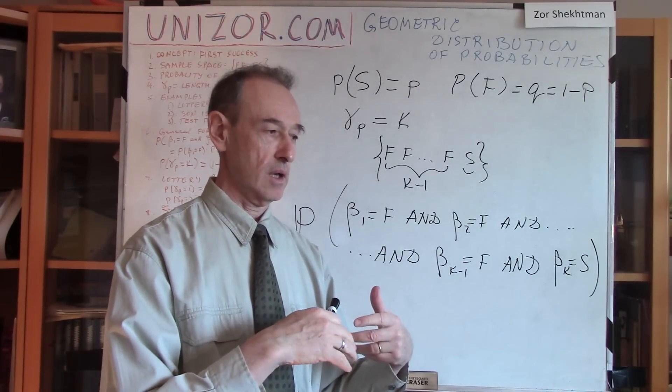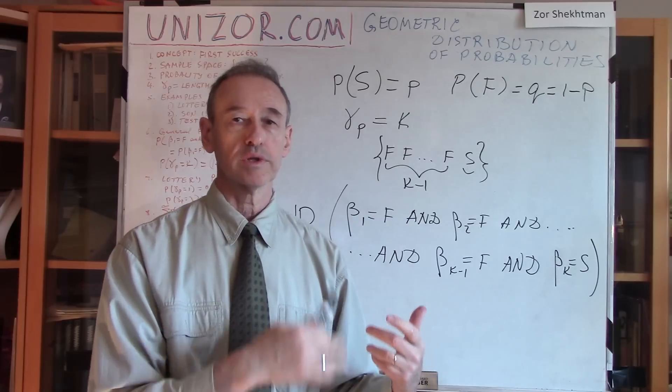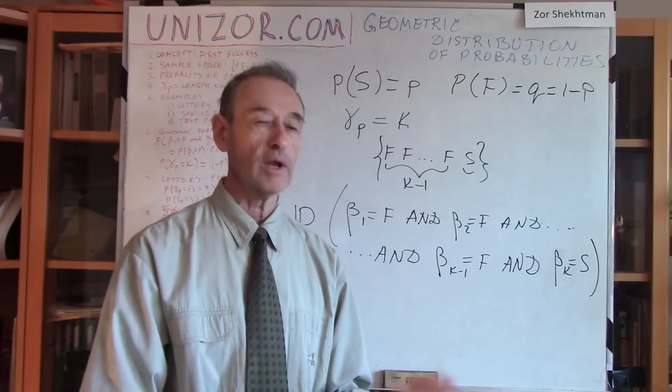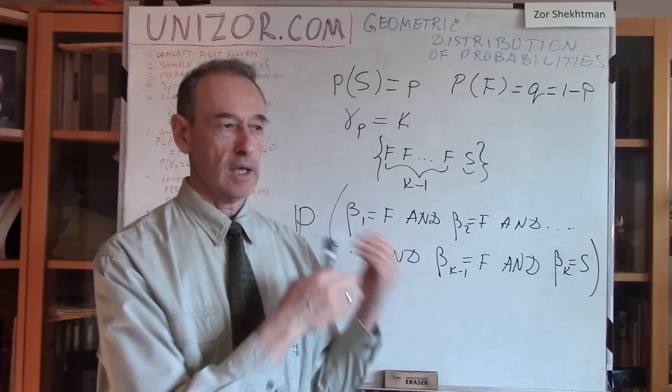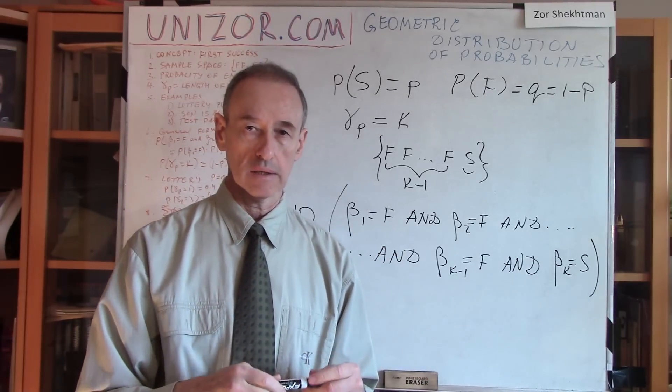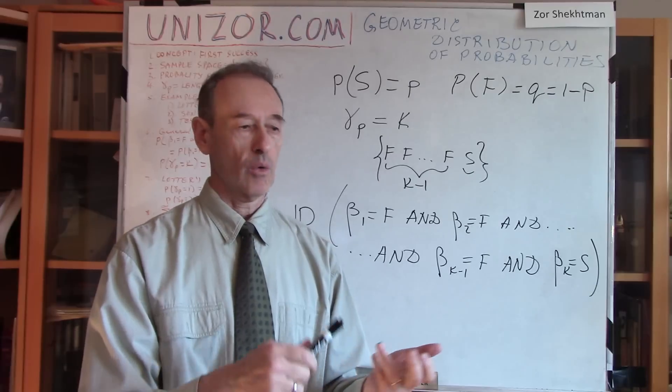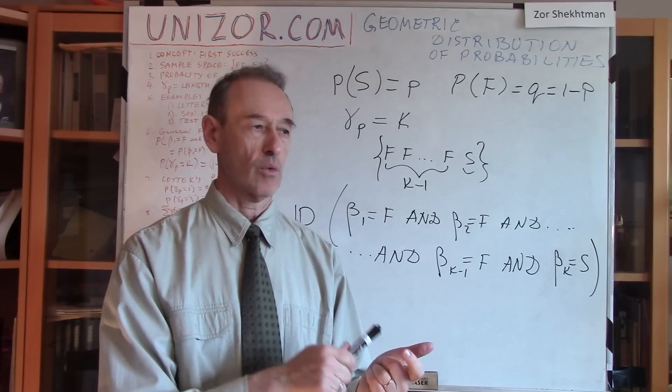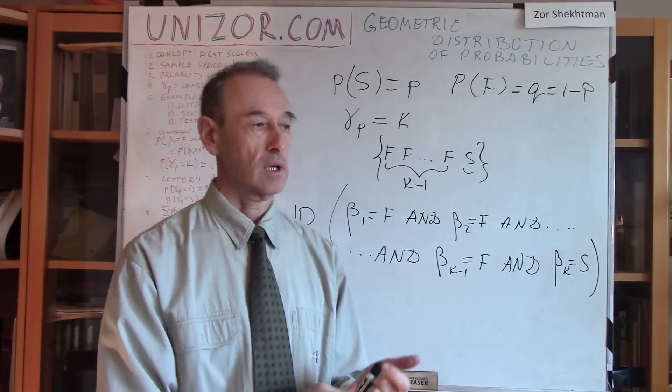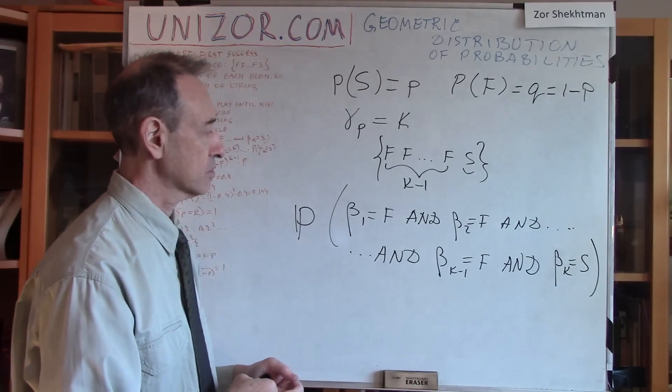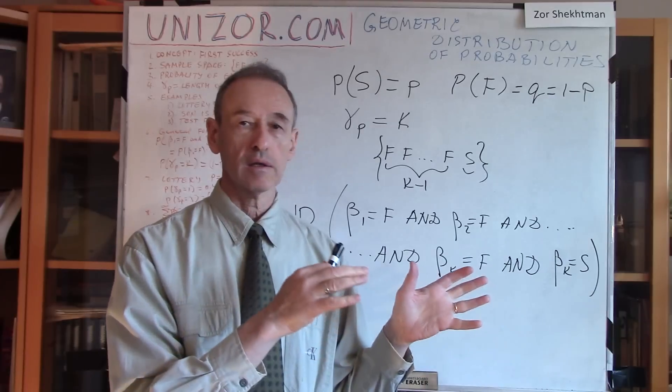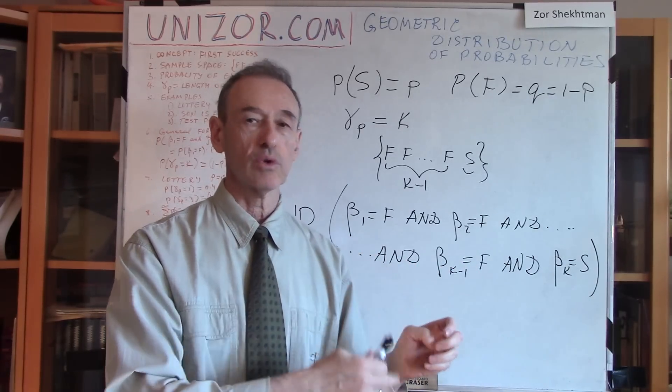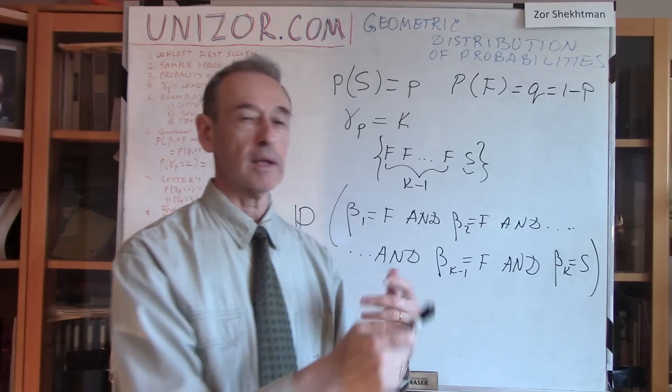Now, what's very important is all these Bernoulli experiments must be independent. Now, I probably didn't mention it before, didn't emphasize it before. It's very important. So we are talking about only independent trials. And whatever examples I gave before, like lottery, or giving birth of a daughter, or a test being taken by a student, these are examples of a sequence of Bernoulli experiments independent of each other.